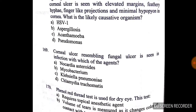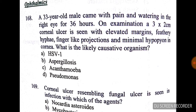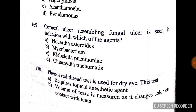Question number 168: a 33-year-old male came with pain and watering in the right eye for 36 hours. On examination, a 3×2 cm corneal ulcer is seen with elevated margins, finger-like projections, and minimal hypopyon. What is the likely causative organism? The answer is B — Aspergillus.